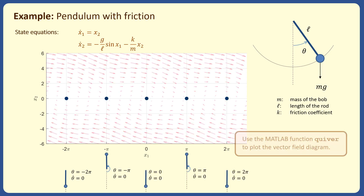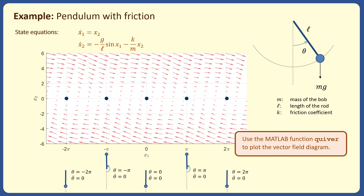We use the MATLAB function Quiver to plot the vector field diagram for this system. We can now start from an initial condition and follow the direction of the vectors in the vector field to find the trajectory of the system.